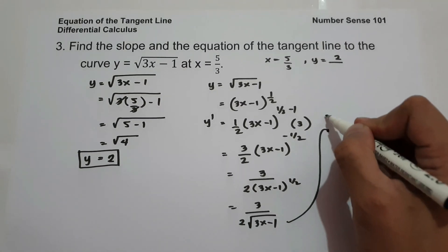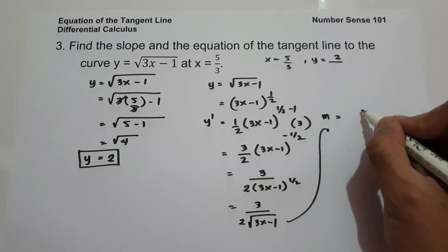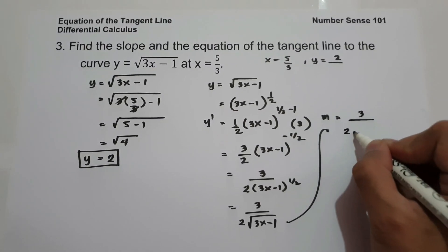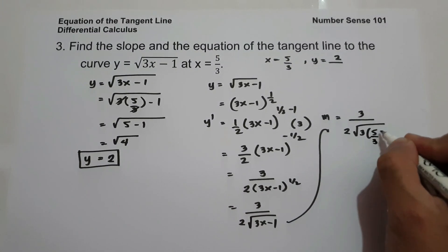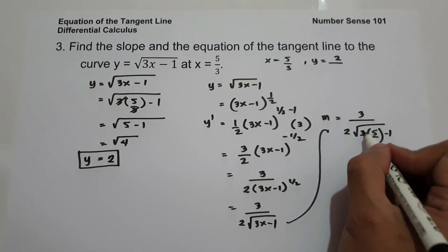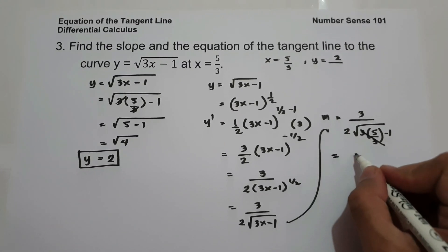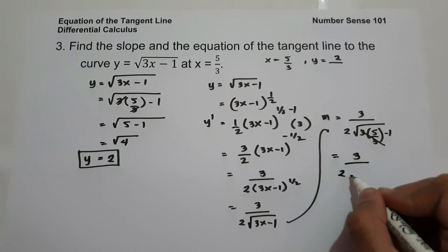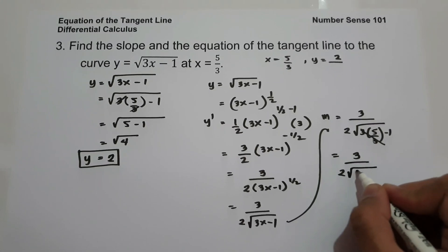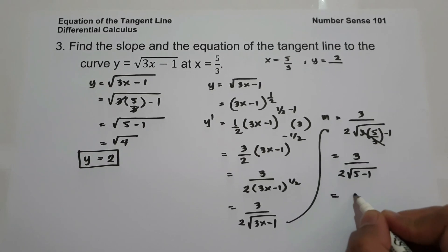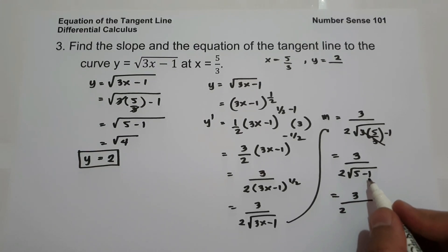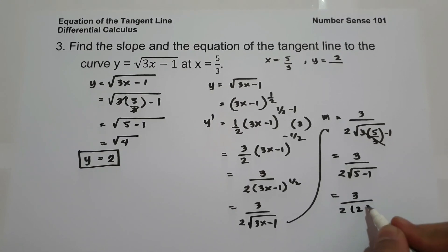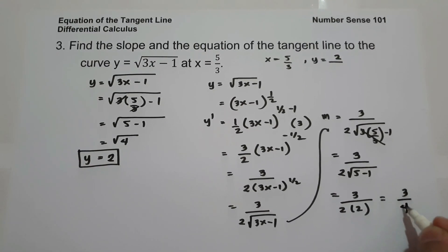To find the slope, substitute x = 5/3: slope equals 3 over 2 times 1 over square root of 3 times (5/3) minus 1. Cancelling 3 gives 3 over 2 times square root of 5 minus 1. Since 5 minus 1 is 4 and the square root of 4 is 2, we get 3 over 2 times (1/2). Therefore, the slope is 3 over 4.